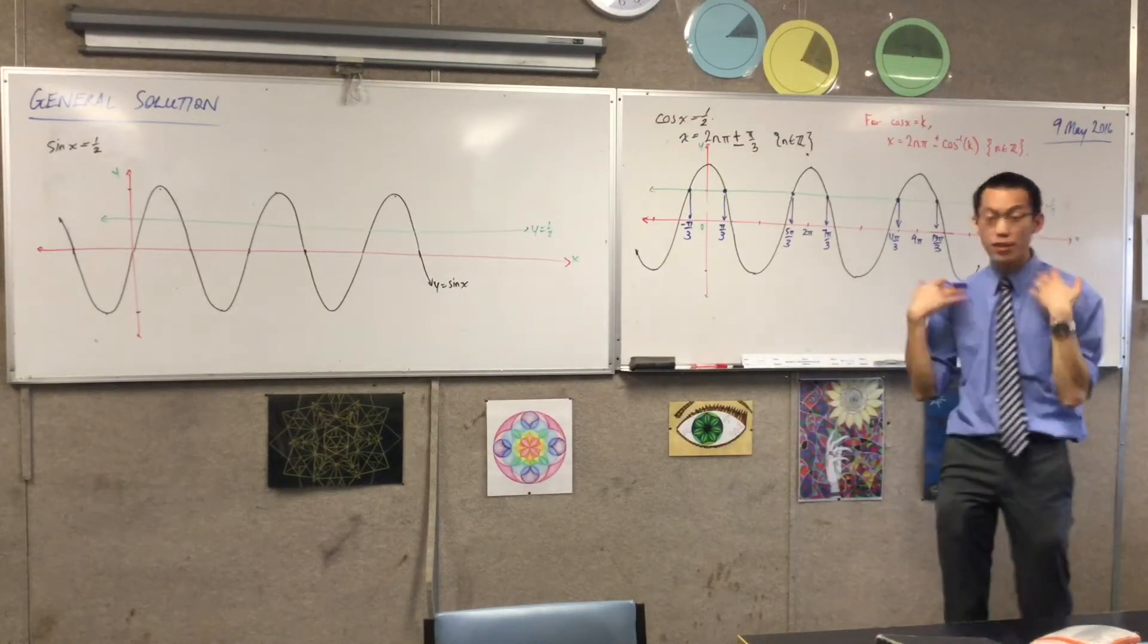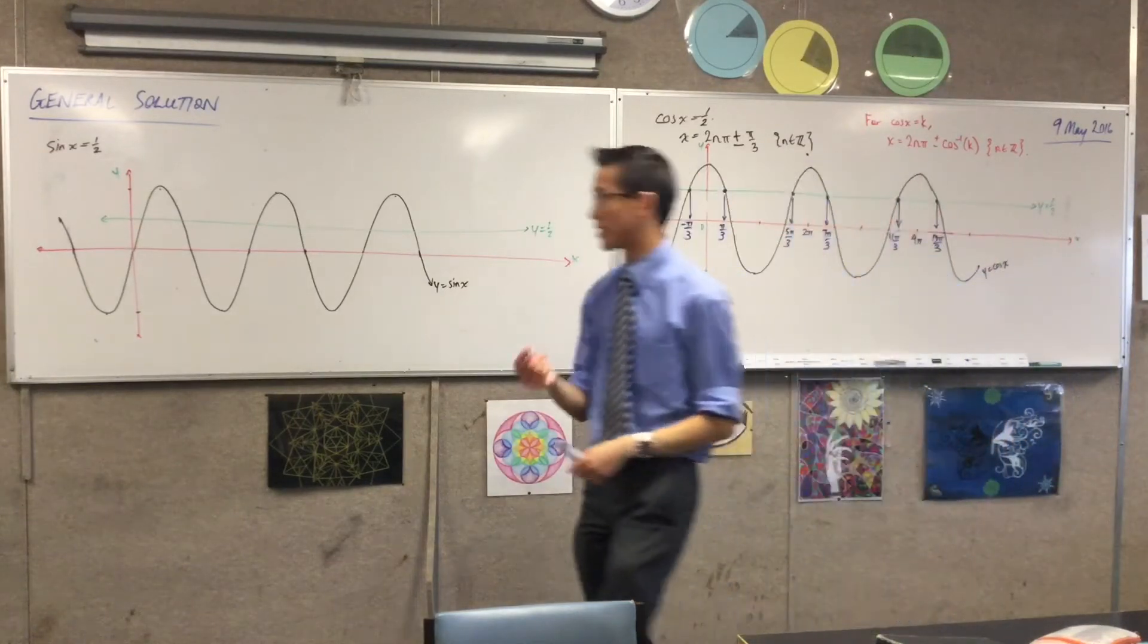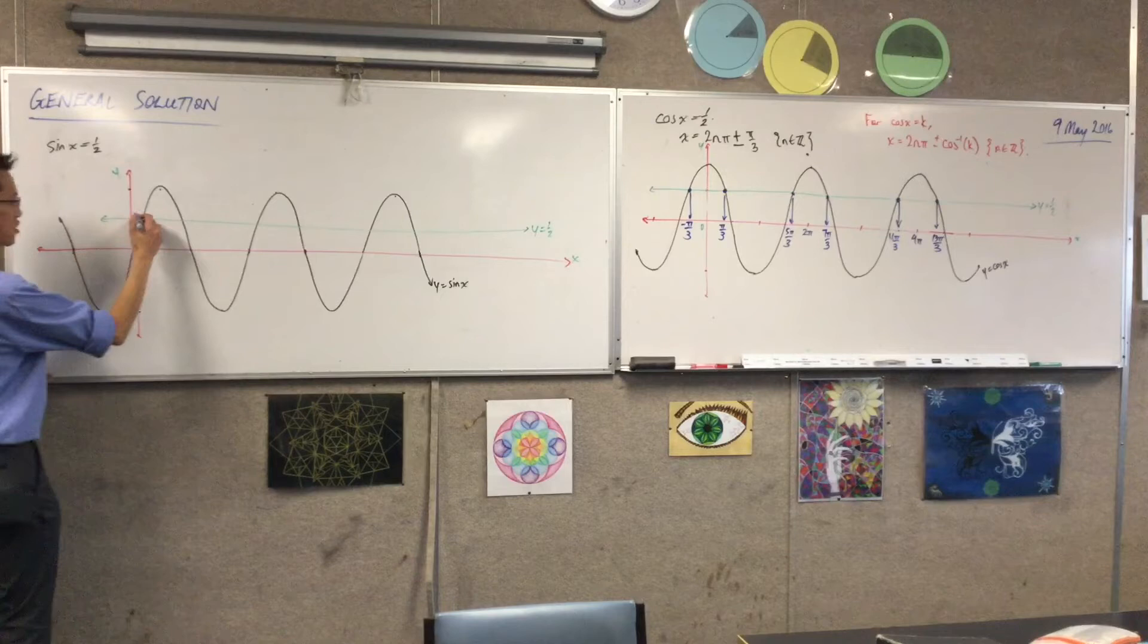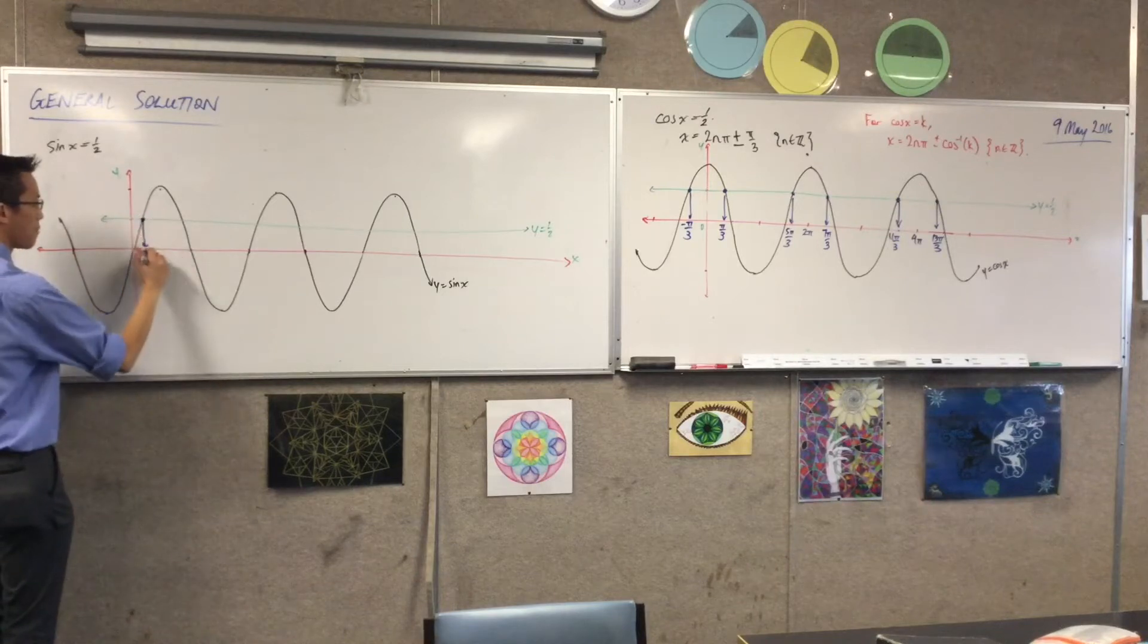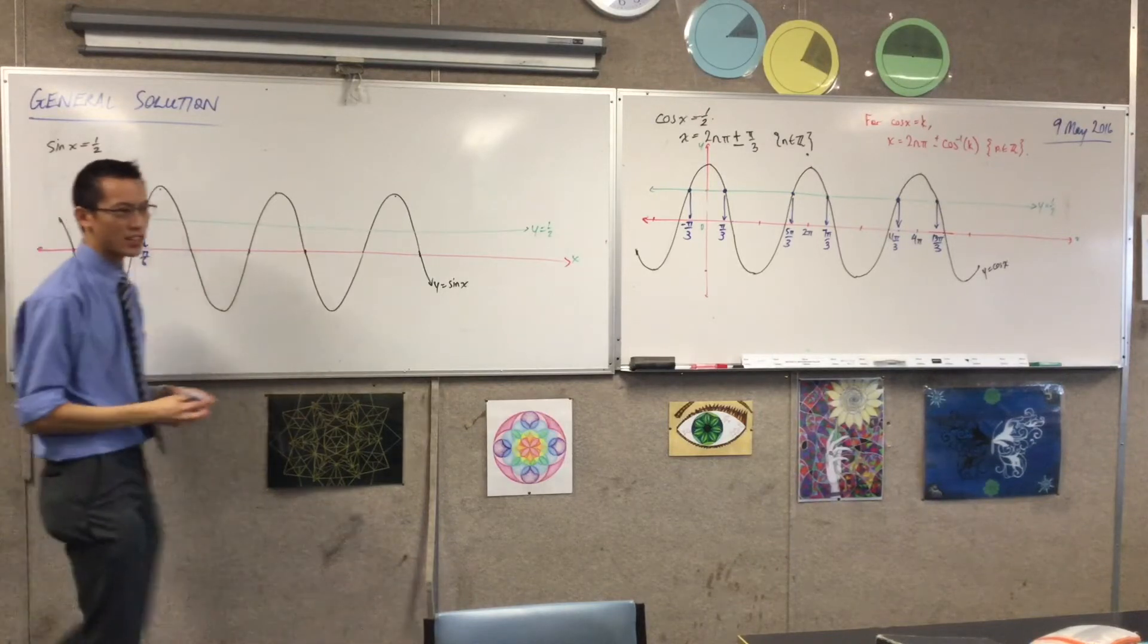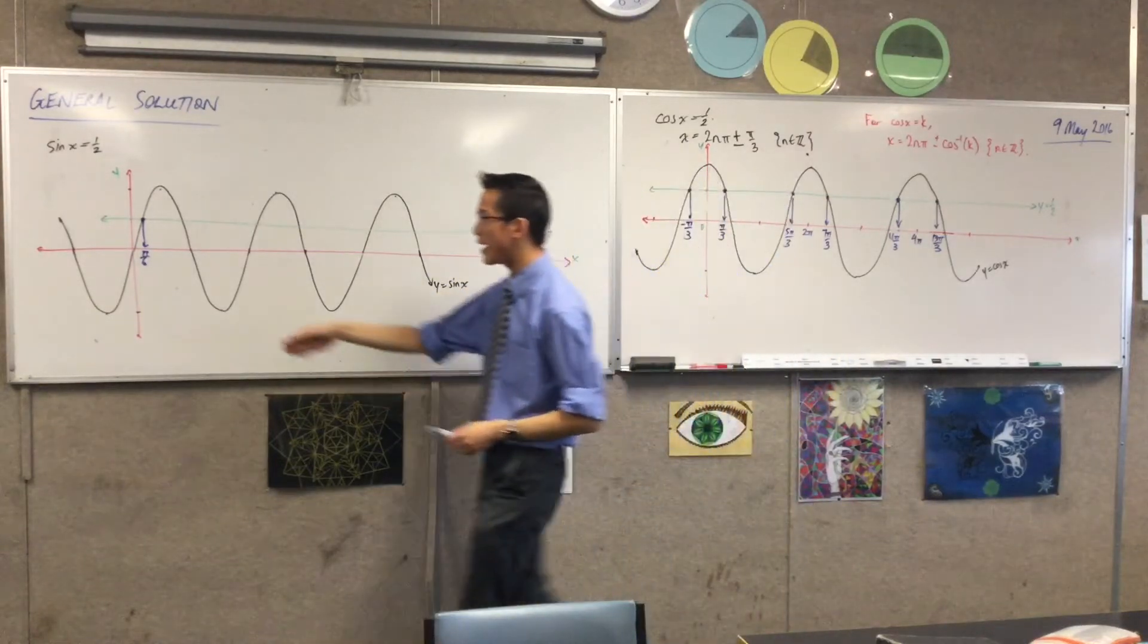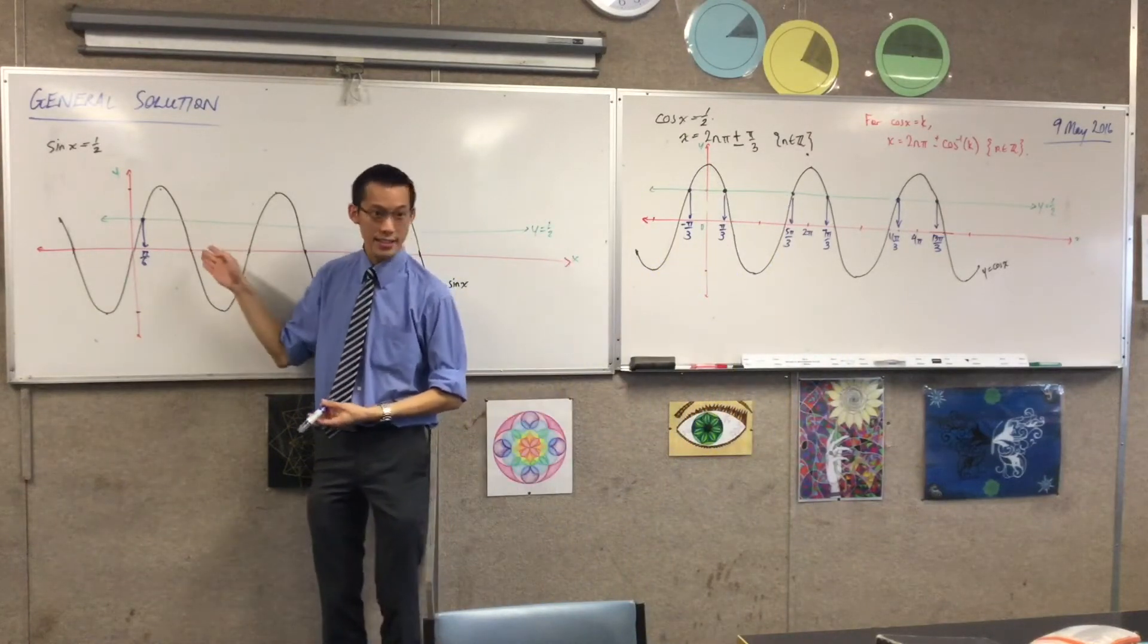We can hopefully know the first solution now. In fact, this is hopefully the easiest one to memorize. Sine of what will give me a half? Pi over 6. And you can see pi over 6 is nice and close. If you drew it well, it should be about a sixth of the way to the next intercept after zero.